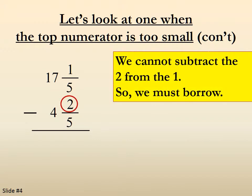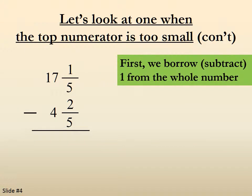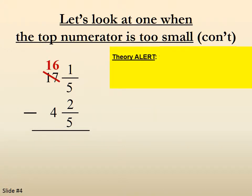So we can't take 2 from 1, so we have to borrow. The question is how do you borrow from a whole number and apply it to a fraction? First you subtract 1 from the whole number. Well here's your theory alert. We're going to take the 17 and think of it as 16 plus 1. The 1 we're going to think of as 5 over 5.